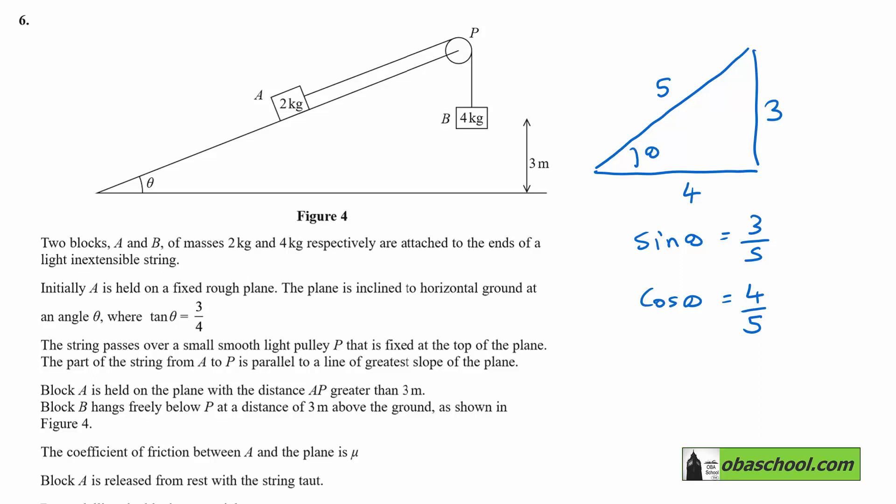The string passes over a small, smooth light pulley P that is fixed at the top of the plane. The part of the string from A to P is parallel to a line of greatest slope of the plane. Block A is held on the plane with the distance AP greater than 3 meters. Block B hangs freely below P at a distance of 3 meters above the ground, as shown in the diagram. The coefficient of friction between A and the plane is mu. Block A is released from rest with the string taut.